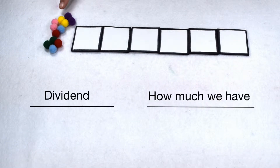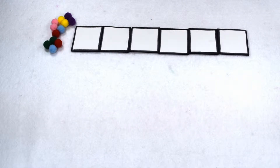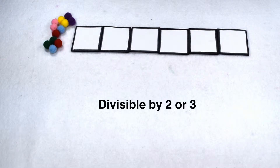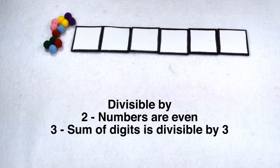In a division problem, the dividend tells us how much we have and the divisor tells us how we're going to group and share it. How can we determine which numbers can be divided by six without any remainders? If a number is divisible by six, then it's also divisible by two and three. Numbers that are divisible by two are even numbers, meaning they end in zero, two, four, six, or eight. A number is divisible by three if the sum of its digits is also divisible by three.